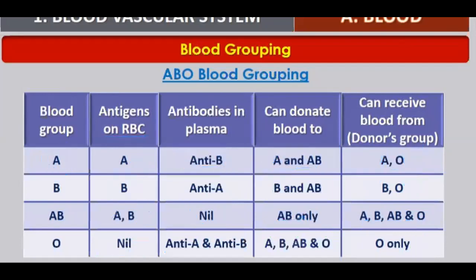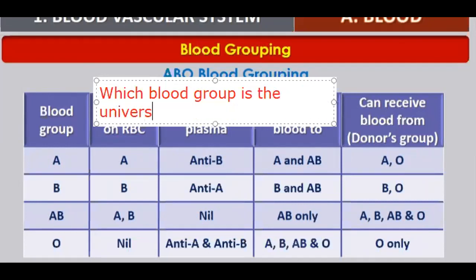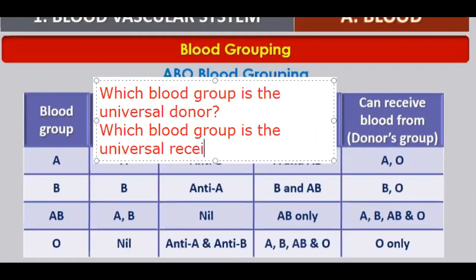That was all about the ABO blood grouping system. I hope you understood it. Based on this, you need to solve these questions: Which blood group is the universal donor? Which blood group is the universal recipient? I hope students can now solve these questions on the basis of the blood grouping system.